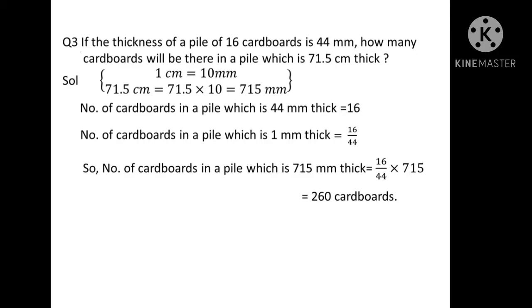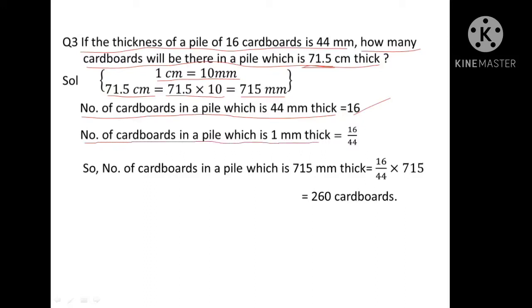Question number 3: If the thickness of a pile of 16 cardboards is 44 millimeters, how many cardboards will be there in a pile which is 71.5 centimeters thick? First, we convert 71.5 centimeters to millimeters: 71.5 multiplied by 10 equals 715 millimeters. Number of cardboards in a 44mm pile is 16, so for 1mm it is 16 divided by 44. For 715mm: 16 divided by 44, multiplied by 715, gives 260 cardboards.